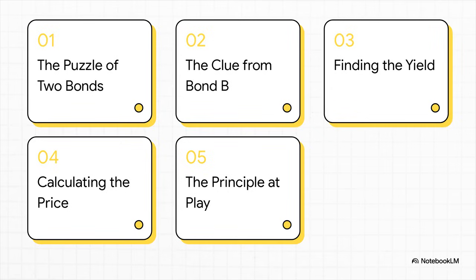Here's our game plan. First, we'll set up the puzzle itself. Then we'll find a sort of master key that's hidden inside Bond B. After that, we need to shape that key so it fits Bond A, use it to calculate the price, and then finally, we'll zoom out and see the big picture principle that makes it all work.